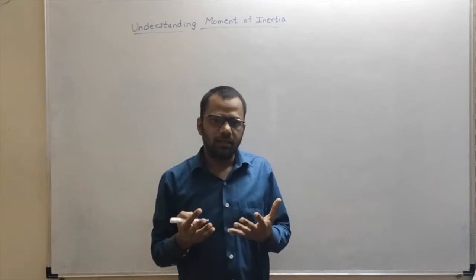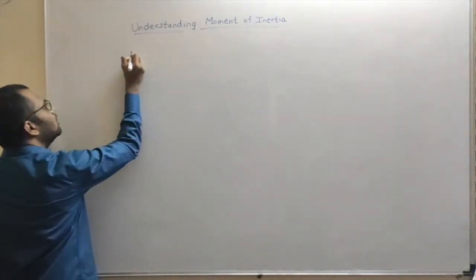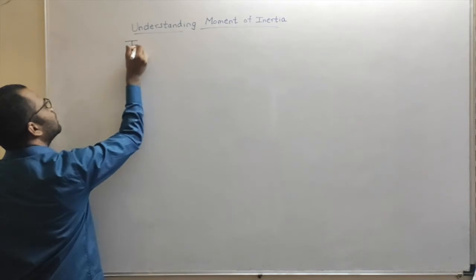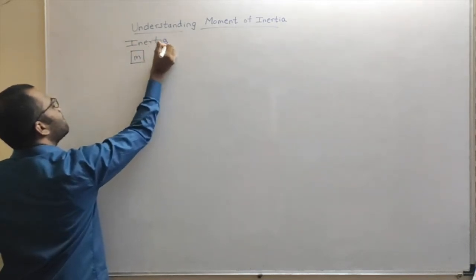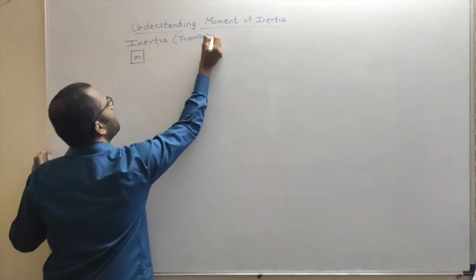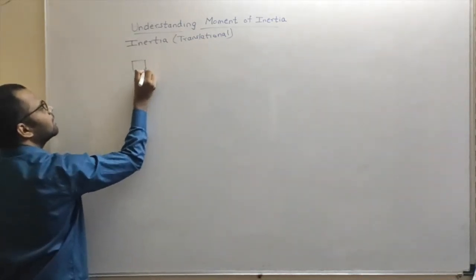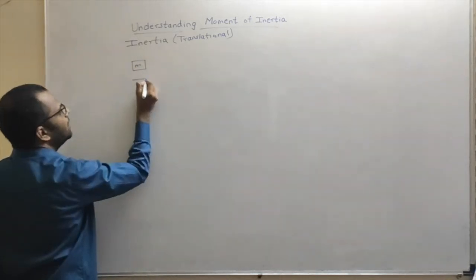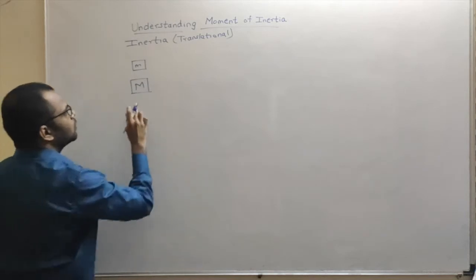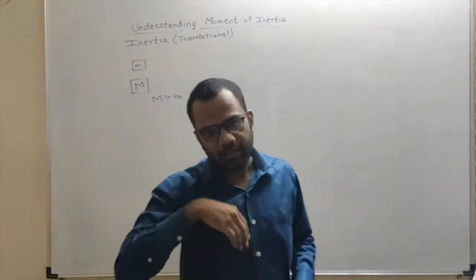Basically, inertia is the opposition provided by the body to change its state. Here we are talking more specifically about translational inertia. Suppose I have two bodies — one of smaller mass m and another of greater mass M, where M is greater than m.